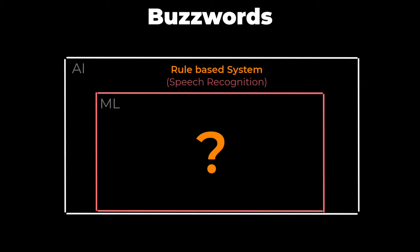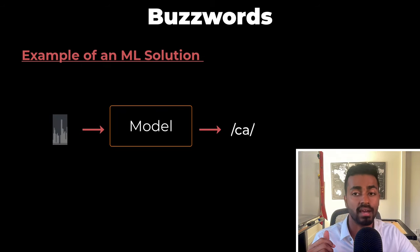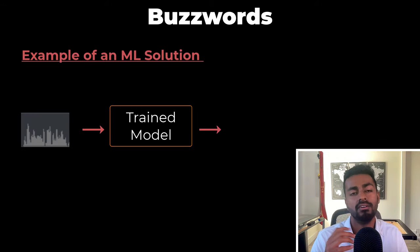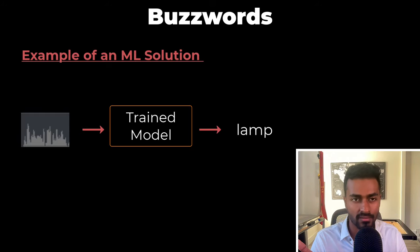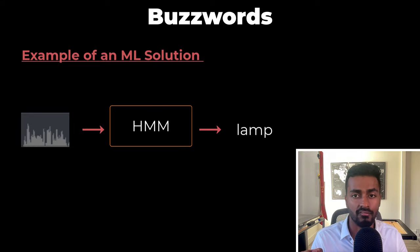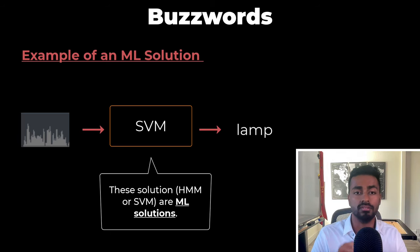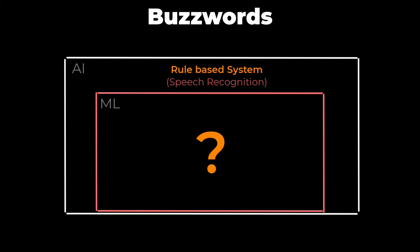What are examples of solutions that fall in the outer rectangle versus the inner rectangle? The rule-based system we described previously used a bunch of rules to recognize a word — this is not a trained model based on patterns in data, and hence rule-based systems are AI solutions but not ML solutions; they lie in the outer region. But instead of a rule-based system, we can train a model on data to recognize patterns between speech and different phonemes, then convert it into phonemes to predict a word. The model here could be a hidden Markov model, a support vector machine, and many more. Because these solutions were created from analyzing patterns between speech and words, they are ML solutions and fit in the inner region.